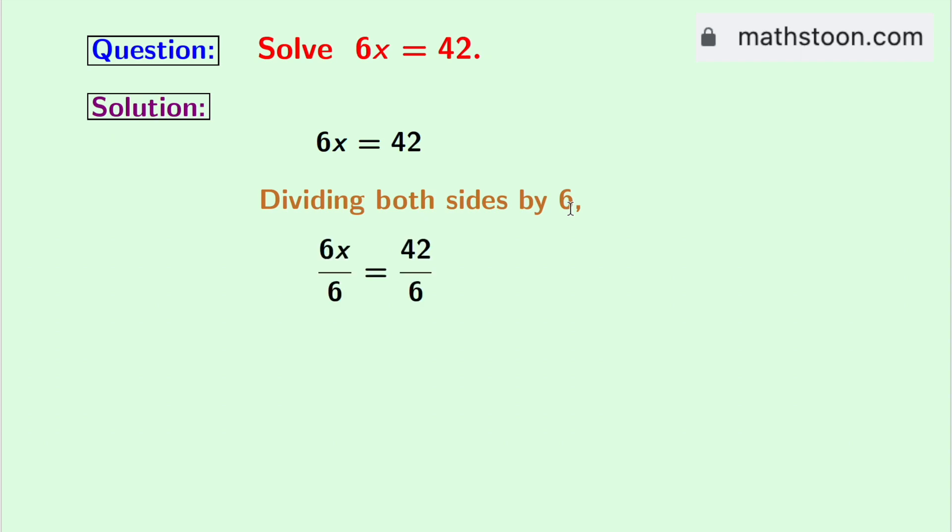And by doing so, we get 6x divided by 6 is equal to 42 divided by 6. See that we have 6 in both the numerator and the denominator. So it gets cancelled. And we are left with x in the left hand side.